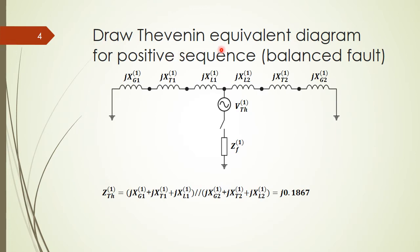Next we draw the Thevenin equivalent diagram for the positive sequence, for the balanced fault case as we did before. We need to calculate the Thevenin equivalent impedance by looking at the fault point in the middle. The equivalent impedance at that point is this branch in parallel with the other branch, and the total impedance is given accordingly.